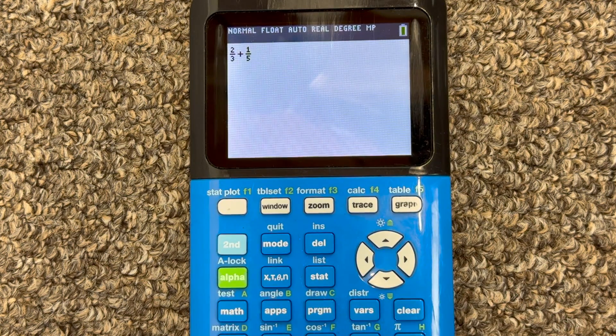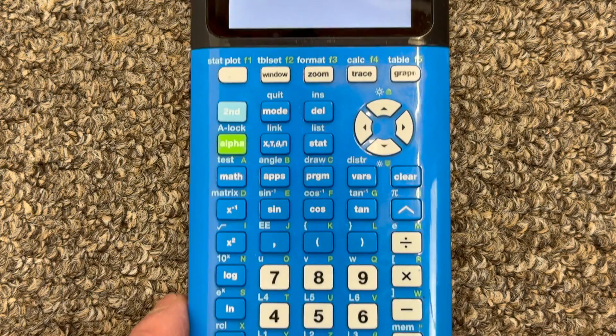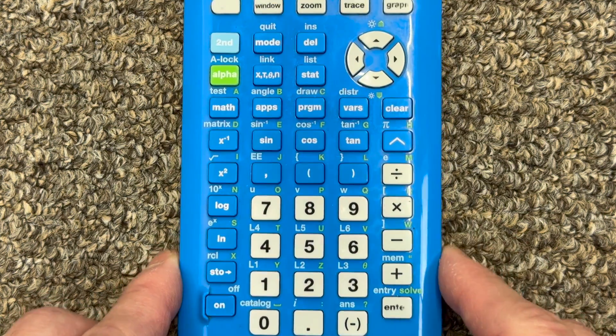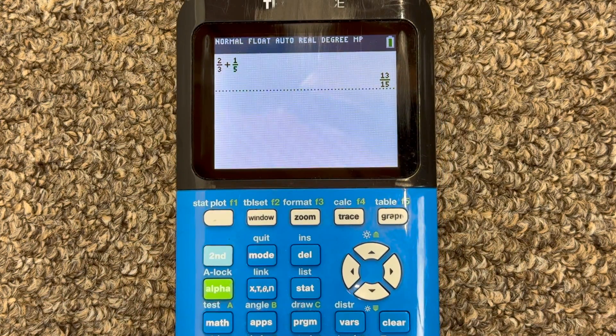So we've got two thirds plus one fifth. And then just press enter, which is down here in the lower right-hand corner. And you can see we've got 13 fifteenths.